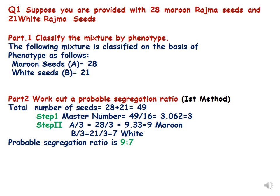Part two is: work out a probable segregation ratio. There are two methods. In the first method, you count the total number of seeds — 28 maroon plus 21 white equals 49 total. Then you find the master number by dividing the total number of seeds by 16. Why 16? Because 16 is the total of the 9:3:3:1 ratio, which is a typical dihybrid Mendelian ratio.